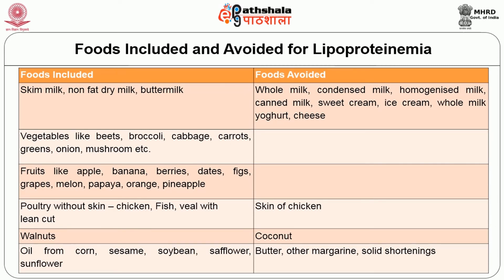Foods included for hyperlipoproteinemia: skim milk, non-fat dry milk, buttermilk, vegetables like beets, broccoli, cabbage, carrot, greens, onion, mushroom; fruits including apple, banana, berries, dates, figs, grapes, melon, papaya, orange and pineapple; poultry without skin, chicken, fish, veal with lean cuts, walnuts, and oils from corn, sesame, soybeans and sunflower. Foods avoided include whole milk, condensed milk, homogenized milk, canned milk, sweet cream, ice cream, whole milk yogurt, cheese, skin of chicken, coconut, butter, margarine and solid shortenings.